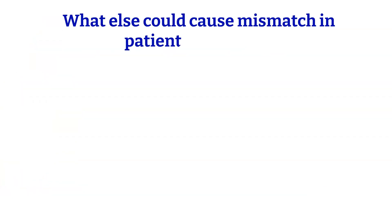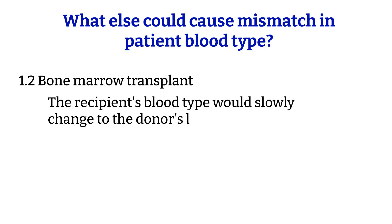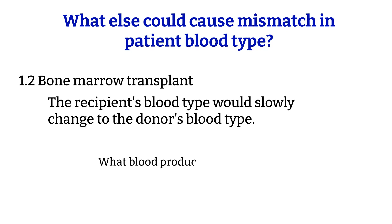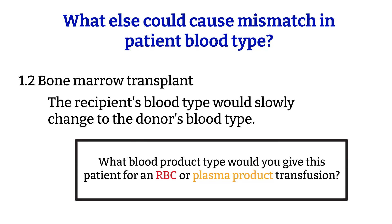Next is the bone marrow transplant patient — specifically in cases where the donor and recipient have different blood types. After a bone marrow transplant, the recipient would slowly change to the donor's blood type. During the transitional period, we could see unusual blood type results due to two red blood cell populations inside the patient. Think about what blood product type you would give these patients, whether RBCs or plasma products, and leave your answer in the comments.